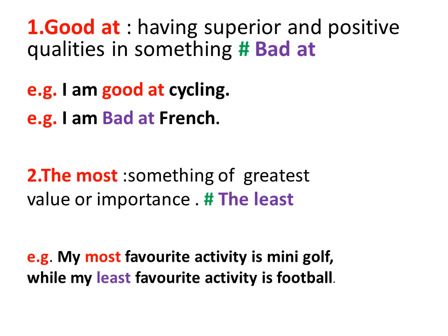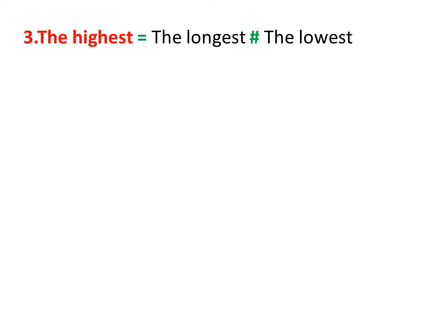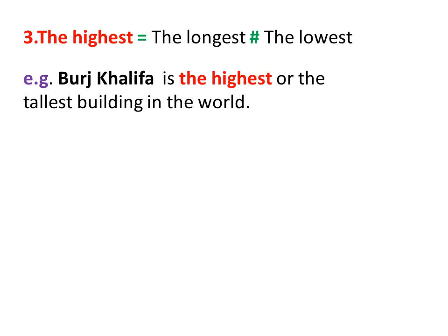Number 3 in adjectives is the highest. The highest means the longest or the tallest. The opposite of the highest is the lowest. For example, Burj Khalifa is the highest or the tallest building in the world. I can use the highest or the tallest because I'm describing the tower.